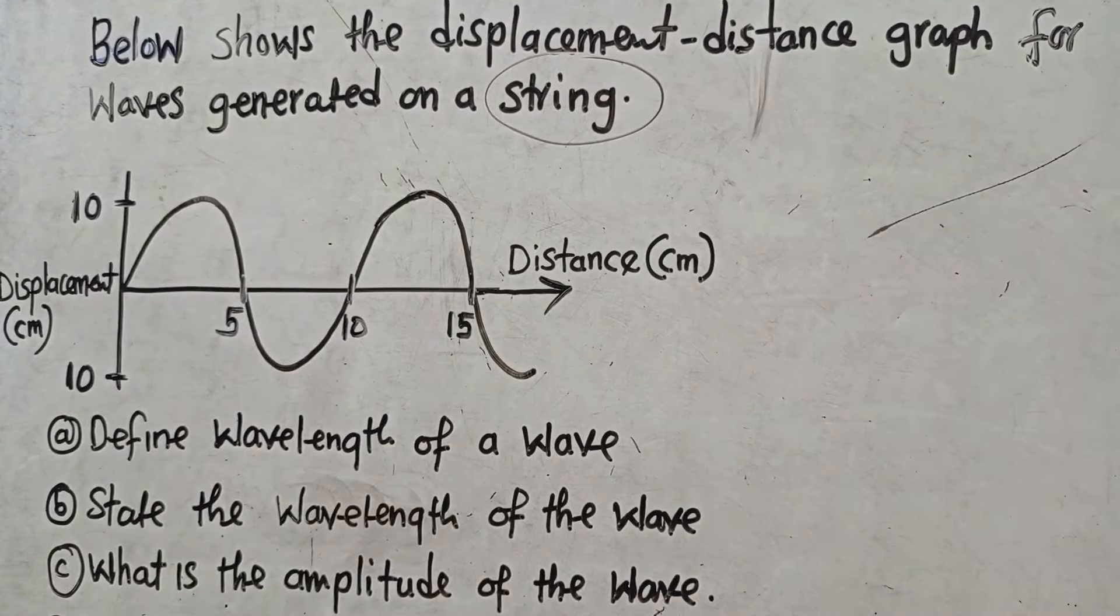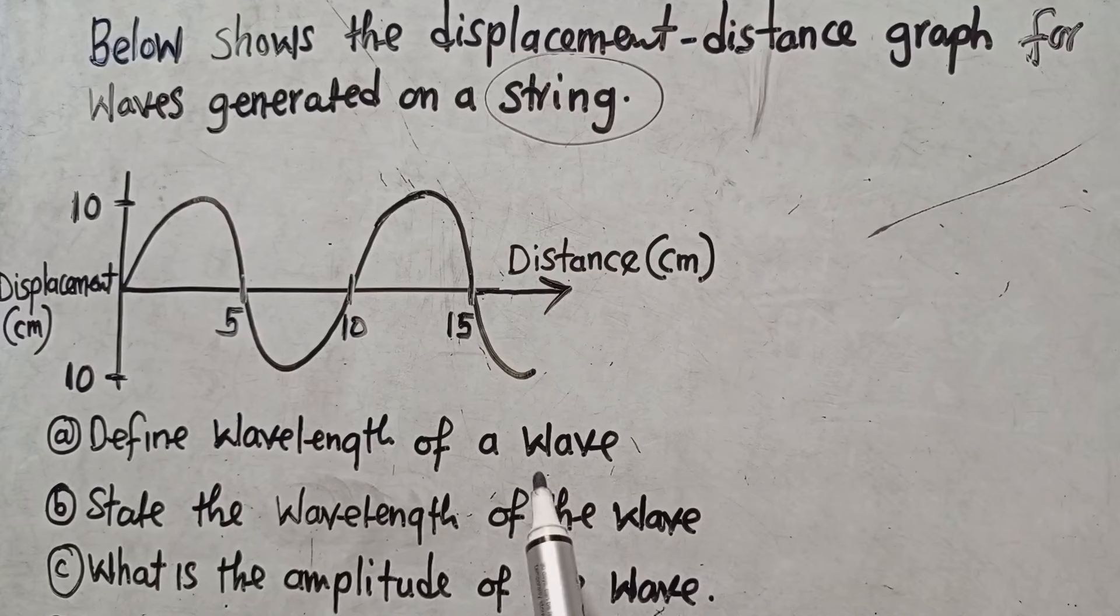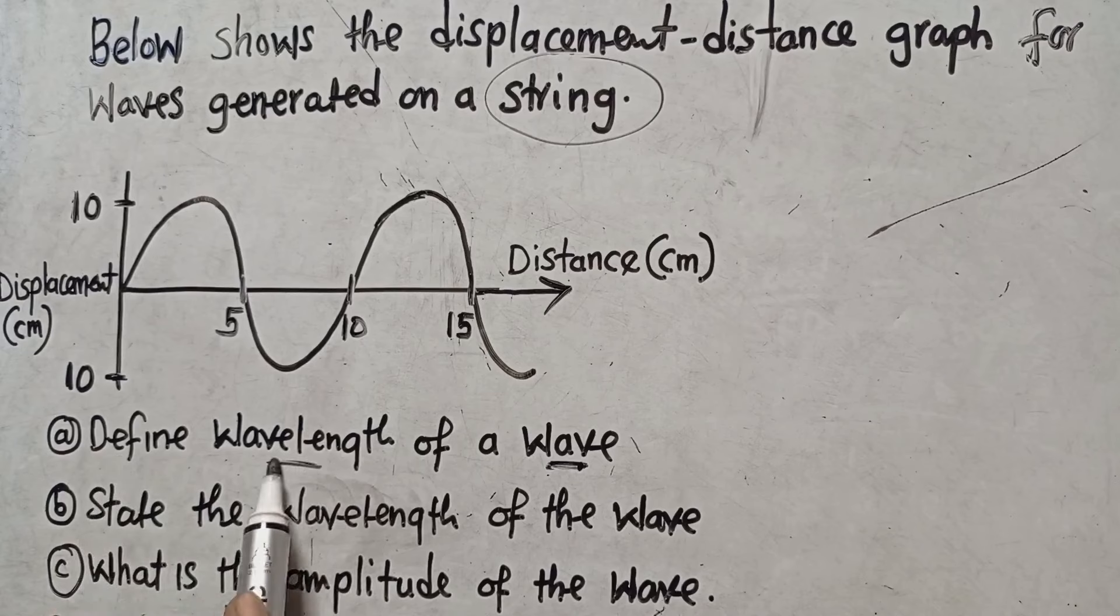This is what you are supposed to know. We now dive into the questions that are given. So this is a diagram you need to understand. We now go to this question that is: define wavelength of a wave. So you know that by definition a wave is a disturbance that occurs on the surface of an object. It is able to transfer heat or energy from one place to the other.